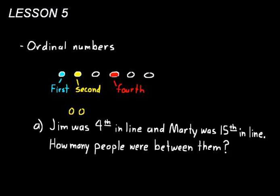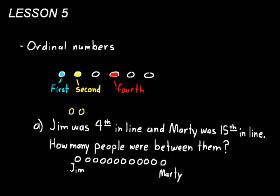But the best way to make sure you get this right is to draw a diagram. Let's use circles — Jim is here as the fourth person. Then we count: fifth, sixth, seventh, eighth, ninth, tenth, eleventh, twelfth, thirteenth, fourteenth, and here's Marty at fifteenth. Where I'm putting the dashed lines — those are the people in between them. We count those up: one, two, three, four, five, six, seven, eight, nine, ten. So ten people are between the two of them.